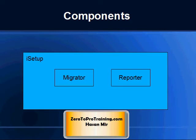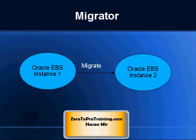The iSetup tool consists of two components: the Migrator and the Reporter. The Migrator helps you migrate data from one Oracle eBusiness Suite instance to another.